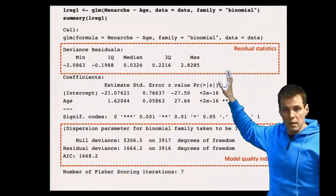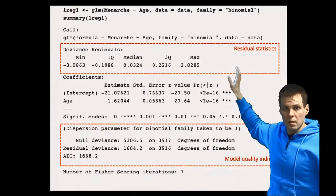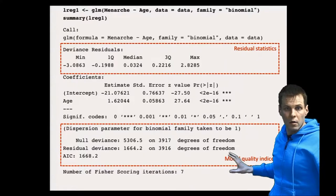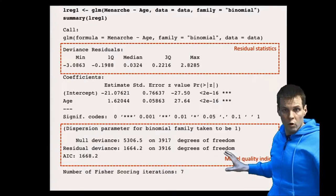We have residual statistics - these are about deviance residuals - and these model quality indices are about deviance, overall deviance of the model.